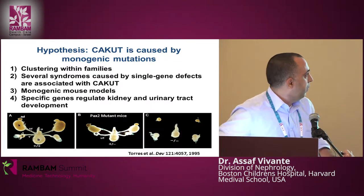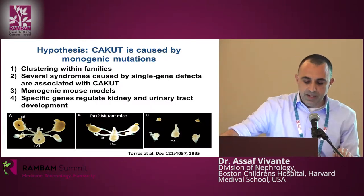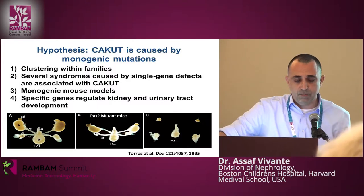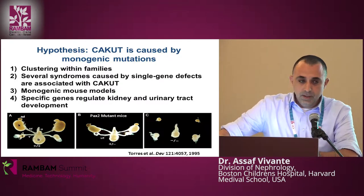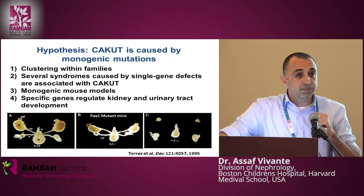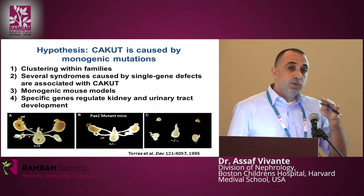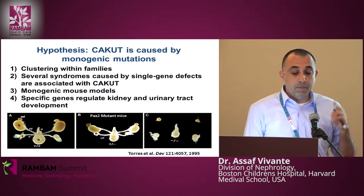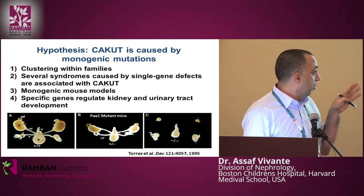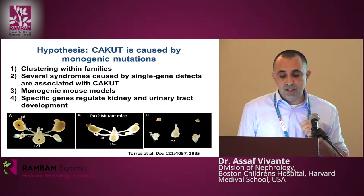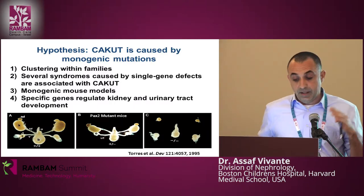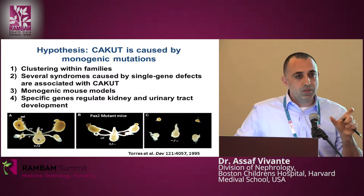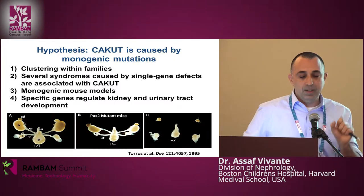The hypothesis for monogenic forms of CAKUT is based on several lines of evidence. CAKUT has been shown to cluster among families — around 15% of patients with CAKUT will have a relative who also has CAKUT. There are several syndromes caused by single gene mutations that have CAKUT as one of their features, with more than 200 syndromic CAKUT genes. There are also more than 200 monogenic mouse models that have CAKUT, and specific genes that regulate kidney and urinary tract development are highly expressed during development.